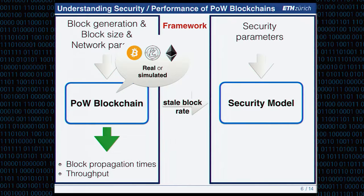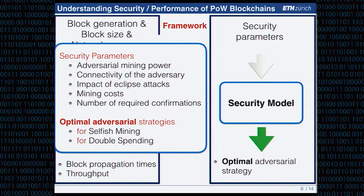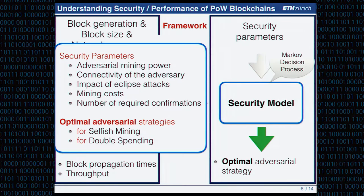In the security model, input parameters include: the adversary mining power, the connectivity of the adversary — how fast can they push blocks to the network — the impact of mining attacks, how easily an adversary can partition the network, mining costs, and the number of required confirmations for transactions. The key contribution is capturing optimal adversary strategies for selfish mining and double spending — the strongest possible adversary — modeled using Markov decision processes.